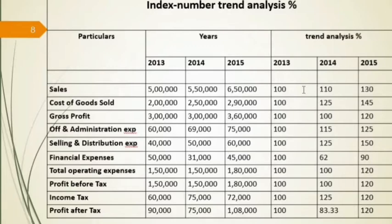Profit Before Tax showed no change in 2014, but increased 20% in 2015. Income Tax was 125 in 2014 — a 25% increase — and 120 in 2015. Profit After Tax relative to the base year of 2013 was 83.33 in 2014 — a decrease — and 120 in 2015, which was a 20% increase relative to 2013.